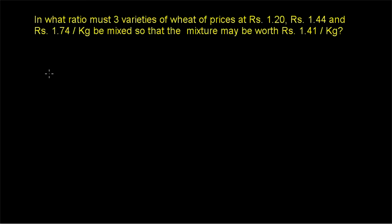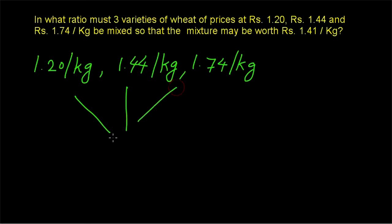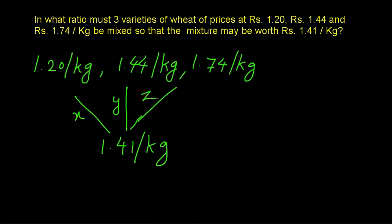So here, 3 varieties of wheat are getting mixed together and a mixture is obtained. The 1st wheat is Rs 1.20 per kg, the 2nd wheat is Rs 1.44 per kg, and the 3rd wheat is Rs 1.74 per kg. All 3 are mixed together to form a mixture worth Rs 1.41 per kg.